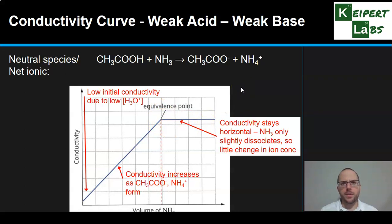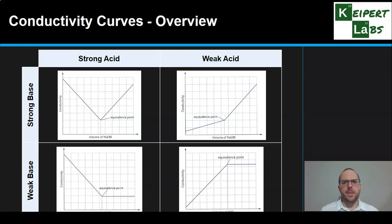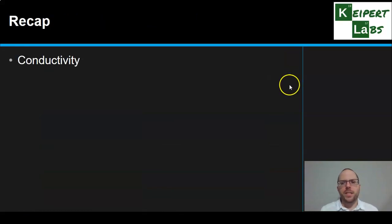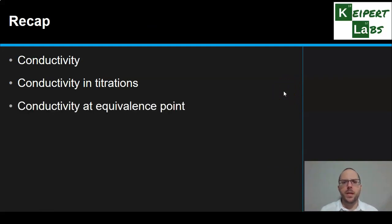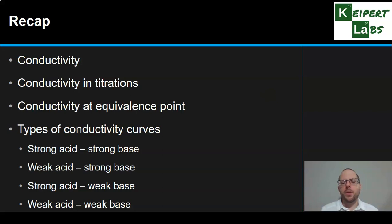You can see that depending on whether we have a weak or strong acid and a weak or strong base, we get a different type of conductivity curve. Here they are mapped out together so you can identify those different shapes for each combination. To summarise: we looked at the concept of conductivity, its relevance in titrations for determining the equivalence point, why conductivity at the equivalence point is not zero, and the four different conductivity curve shapes based on strong or weak acids and bases. Thanks very much for watching — don't forget to like and subscribe.